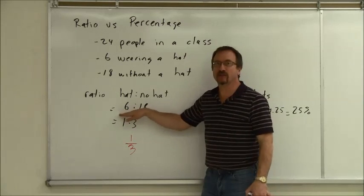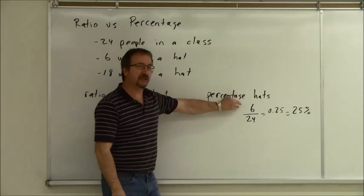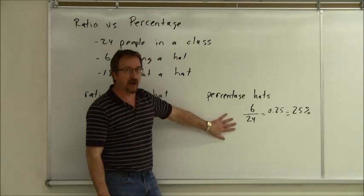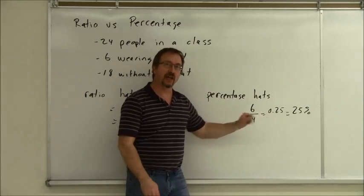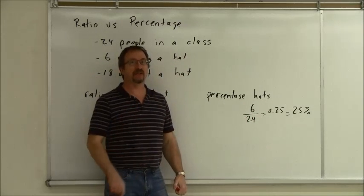So the ratio shows two attributes. The percentage shows of those having the attribute out of the entire population, we can do that division and come up with a percentage. So yes they're related, but they're definitely different things.